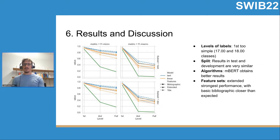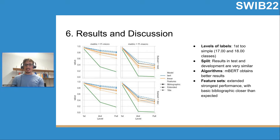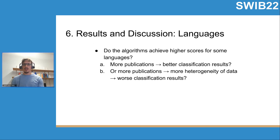Regarding the feature sets, as expected, when we pass more data the results also improve, so extended features obtain the highest results. However, the difference between extended data and bibliographic data is smaller than we expected. We find relatively similar results just by giving the algorithm the three fields of basic bibliographic data.